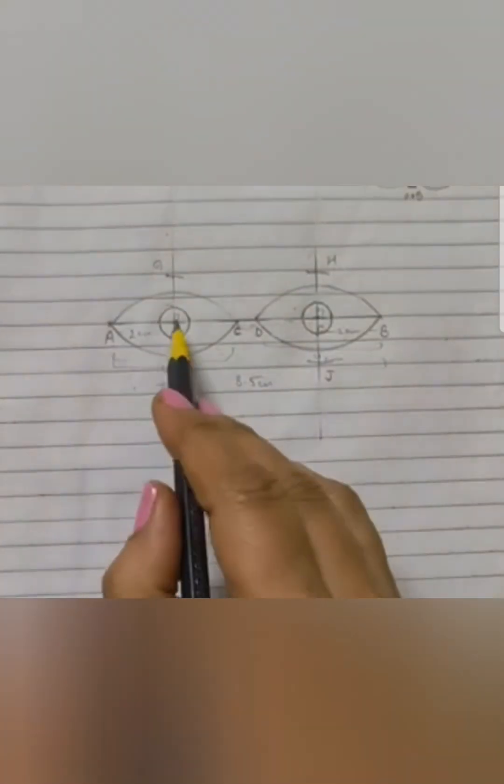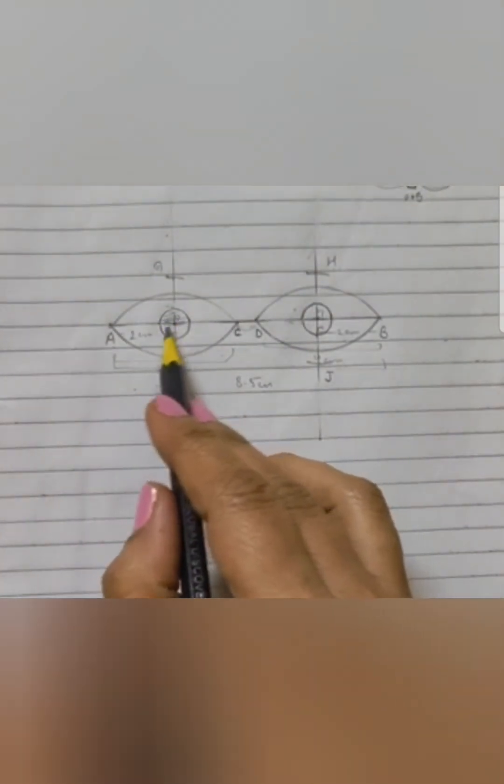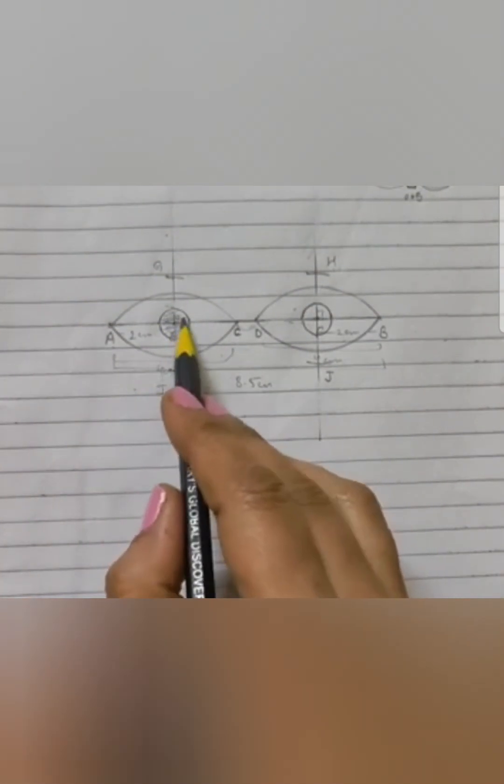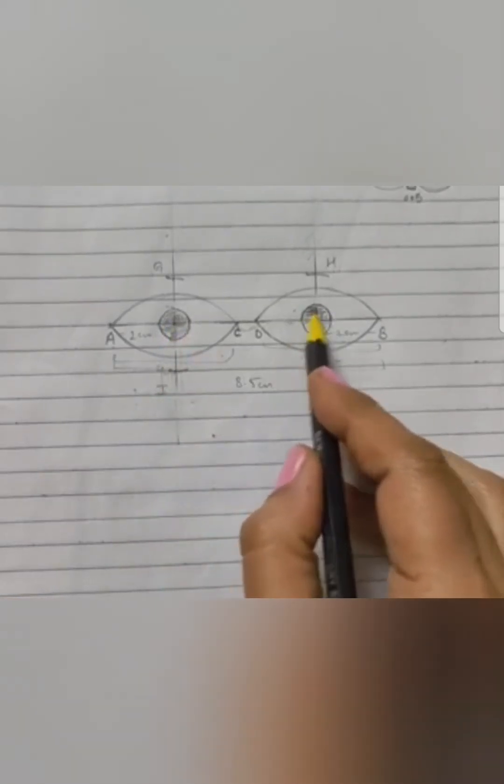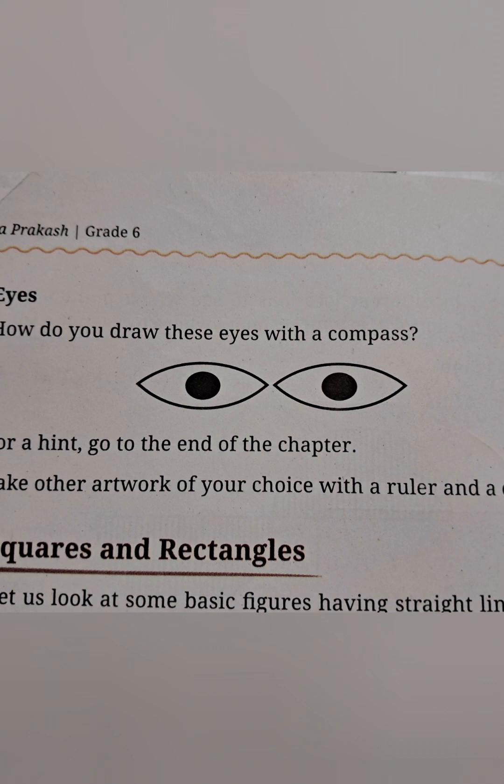Now you could see the eyes have been drawn and the eyeballs have been colored. We got the beautiful eyes with the gaps in between.